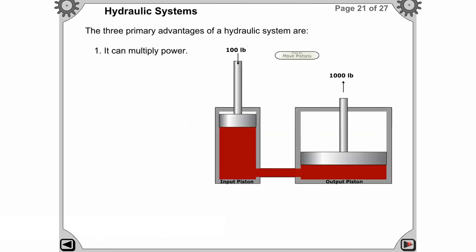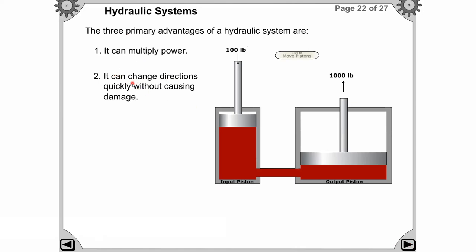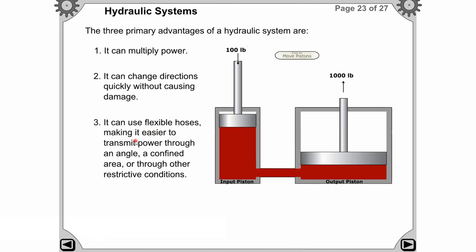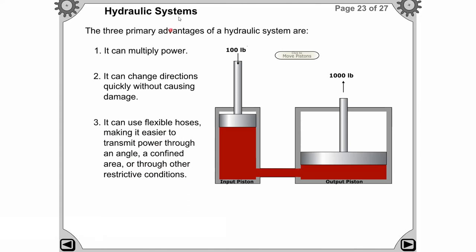This is all about the hydraulic system, which is divided into three segments: power supply, control segment, and output segment, after which we get the work. The three main advantages of a hydraulic system are: first, it can multiply power; second, it can change directions quickly without causing damage; and third, it can use flexible hoses, making it easier to transmit power through angles, confined areas, or other restrictive conditions.